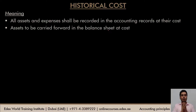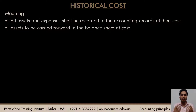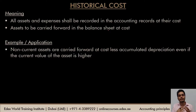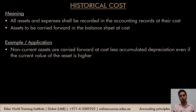The historical cost principle states that all assets, expenses, and transactions should be recorded at the cost of the transaction — the amount actually paid. This amount is known as the historical cost, and assets should also be carried forward in the balance sheet at their historical cost. For example, non-current assets are carried forward at cost less accumulated depreciation, shown at net book value.